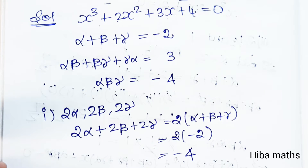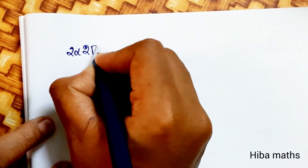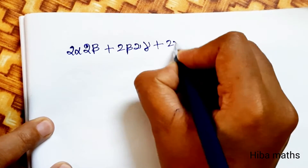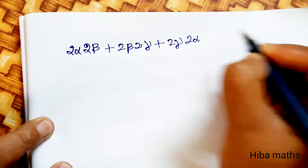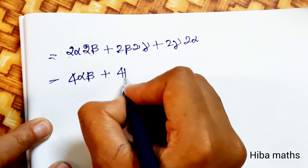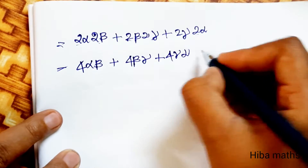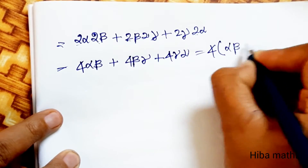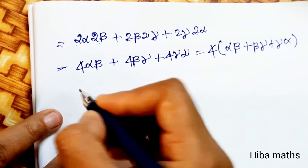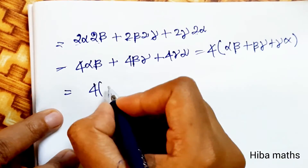Next, S2 = sum of products of roots taken two at a time = 2α·2β + 2β·2γ + 2γ·2α = 4αβ + 4βγ + 4γα. Taking 4 as common: 4(αβ + βγ + γα). The value of αβ + βγ + γα is 3, so S2 = 4 × 3 = 12.